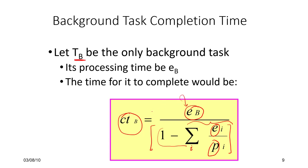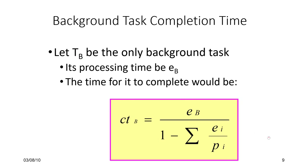If we have a single background task the time it will actually take is scaled by one minus the foreground component. Many simplifying assumptions are made here — for instance, switching time is assumed to be zero or folded into execution time with no other overhead. Regardless, if we make a simple model, the denominator is the background fraction of execution. The denominator becomes the slowdown factor.